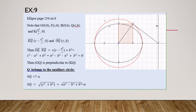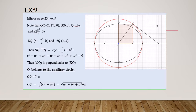Exercise 9, page 234. In an ellipse, E is an ellipse of focus F and directrix D. OBQF is a rectangle. We want to prove that OQ is perpendicular to QK, and we want to prove that Q belongs to the auxiliary circle, which is a circle of center O and radius OA.